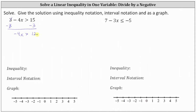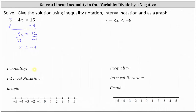Next, to solve for x, we divide both sides by negative four. Because we're dividing by a negative, we do have to reverse the inequality. Simplifying on the left, negative four divided by negative four is one, so we have x. We reverse the inequality to less than, and 12 divided by negative four is negative three. So x less than negative three is the solution using inequality notation.